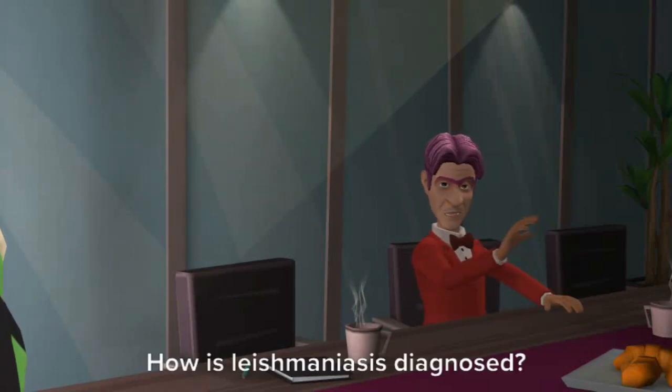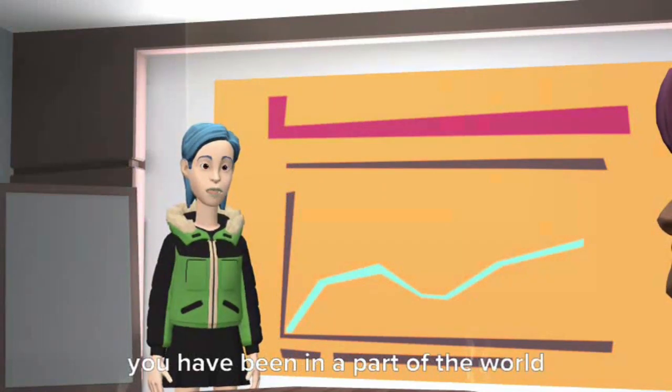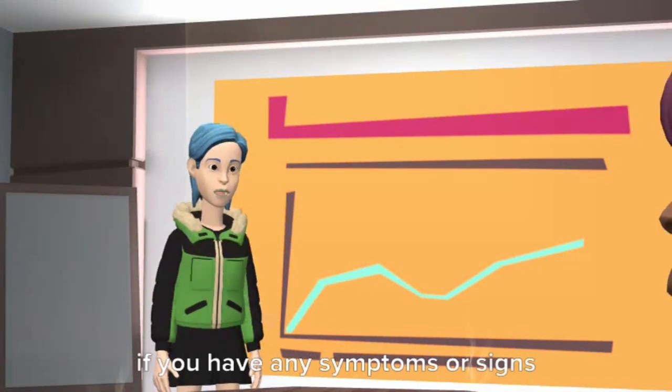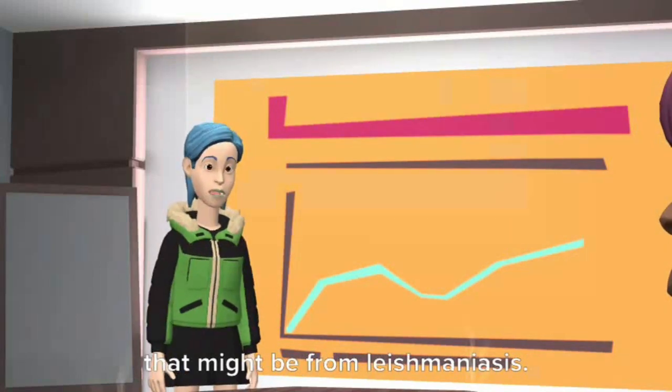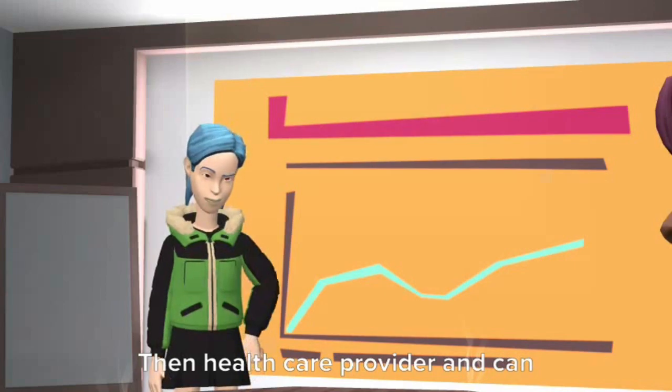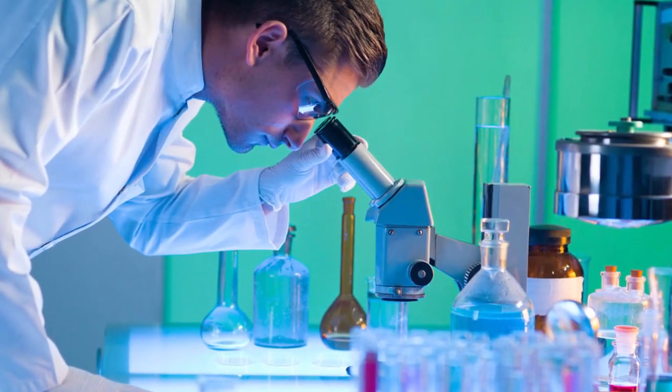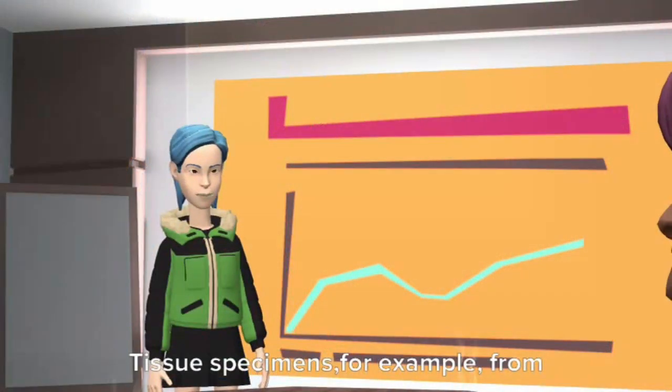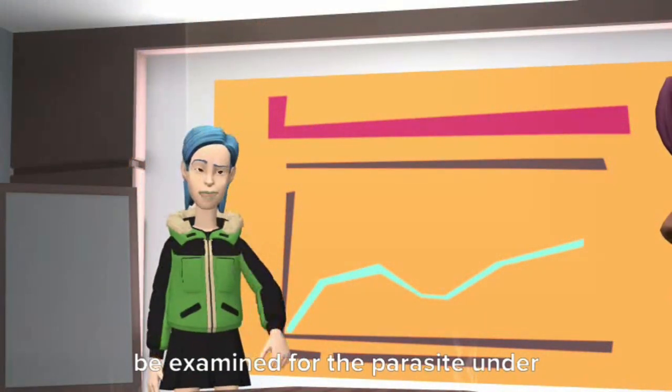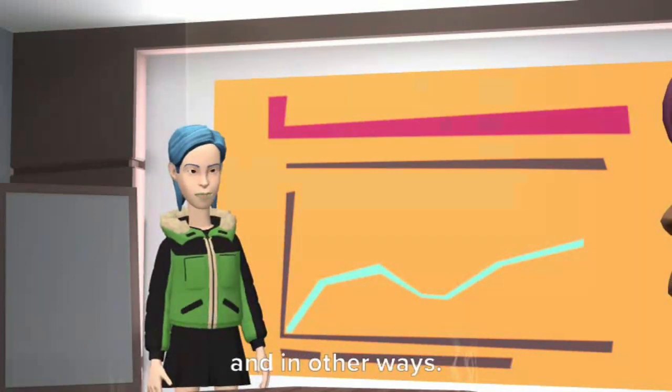How is Leishmaniasis diagnosed? The first steps are to check if you have been in a part of the world where Leishmaniasis is found and if you have any symptoms or signs that might be from Leishmaniasis. Then healthcare providers can get help with the laboratory testing for Leishmaniasis. Tissue specimens, for example from skin sores or from bone marrow, can be examined for the parasite under a microscope, in special cultures, and in other ways.